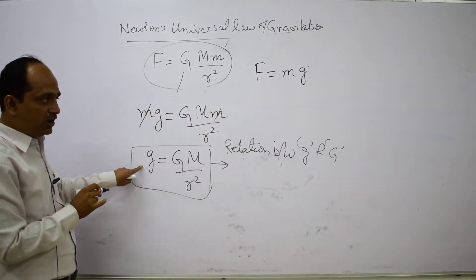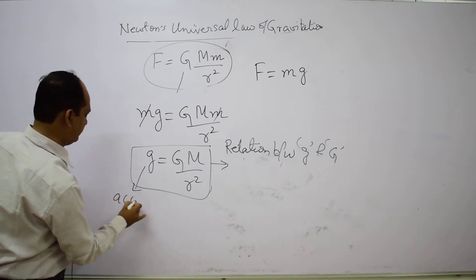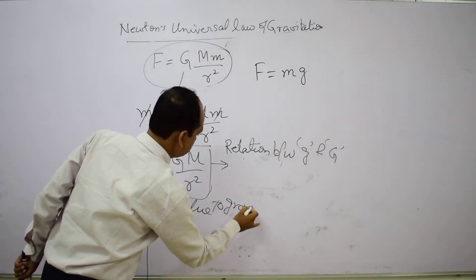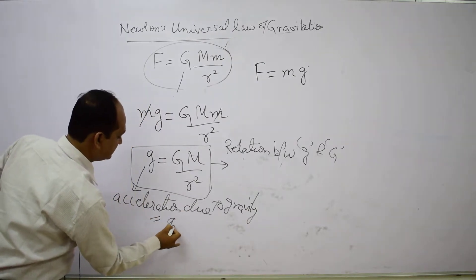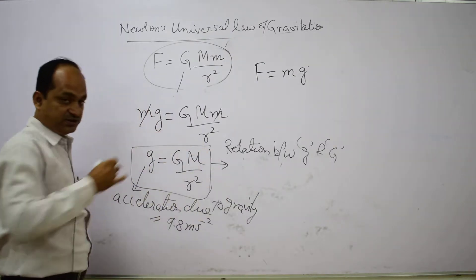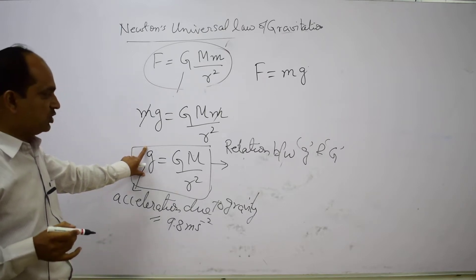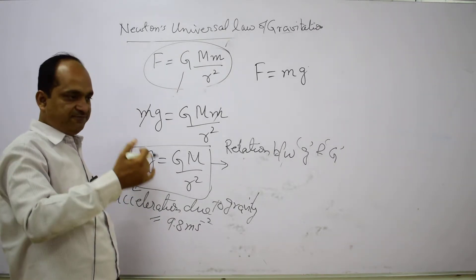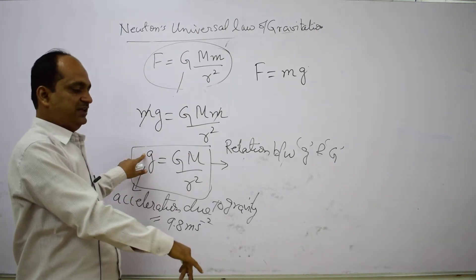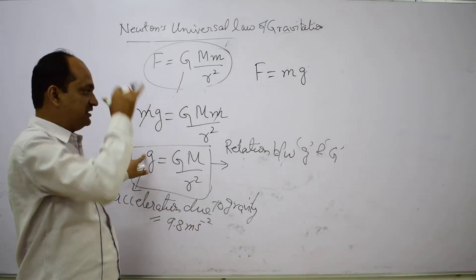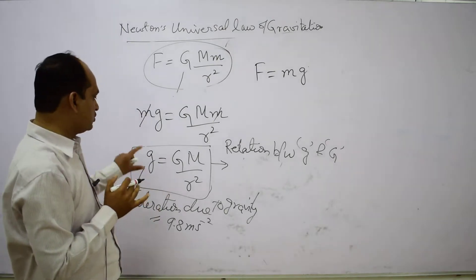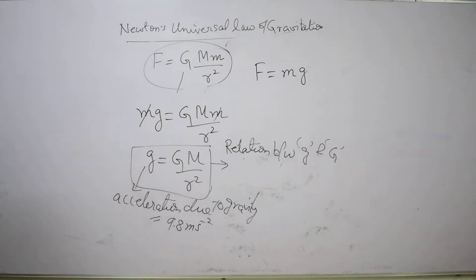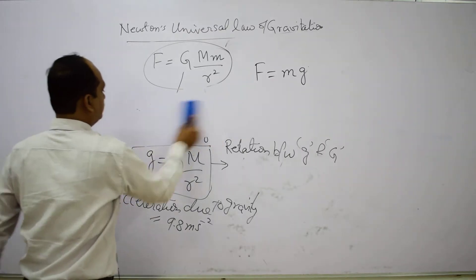Small g is known as acceleration due to gravity and its standard value is taken as 9.8 meter per second square. However, the value of small g is not uniform everywhere. It changes due to the shape of the Earth, height from the Earth's surface, depth inside the Earth, and the rotation of the Earth. We will now discuss its variation due to the shape of the Earth.